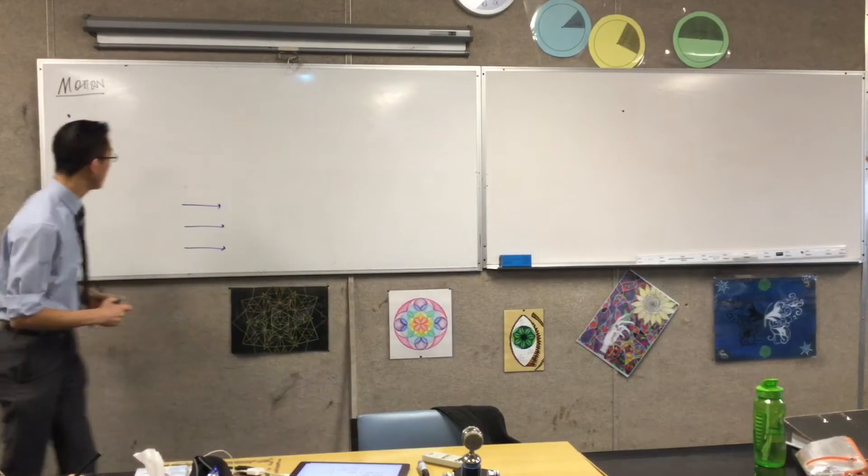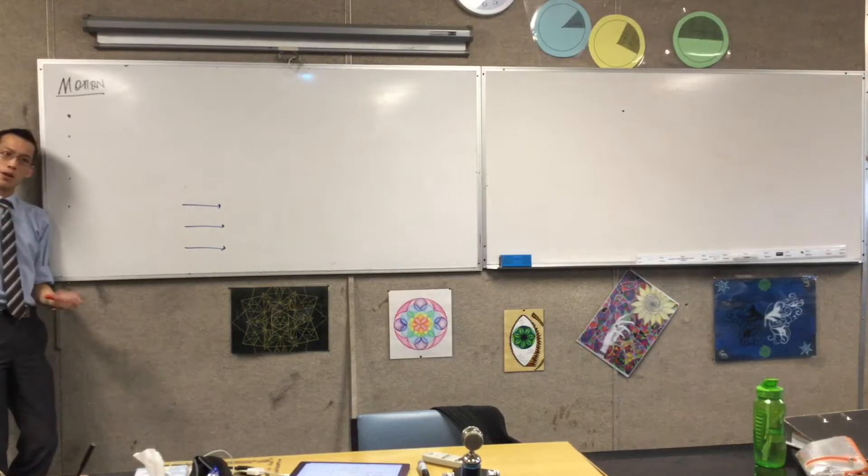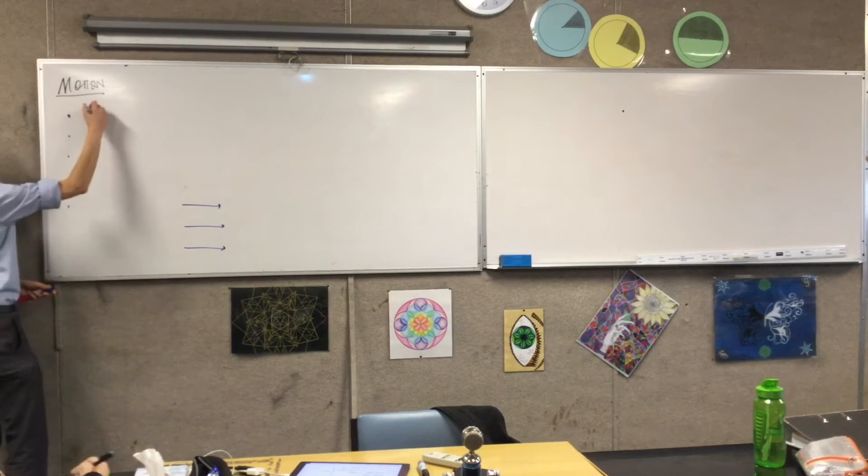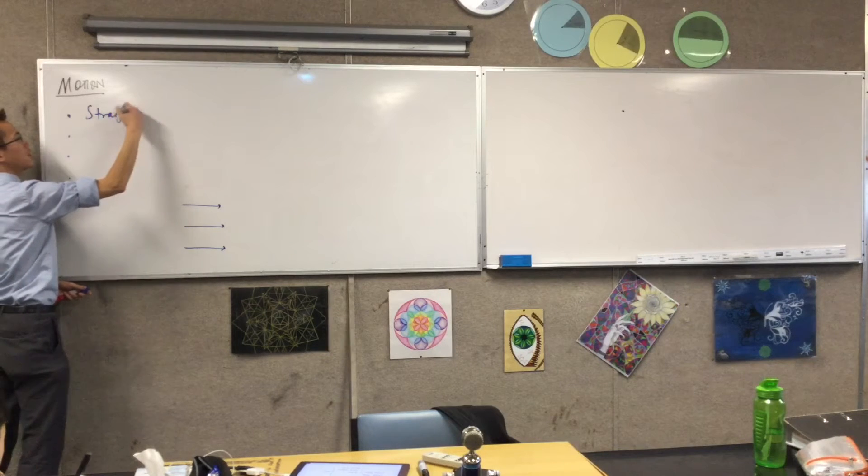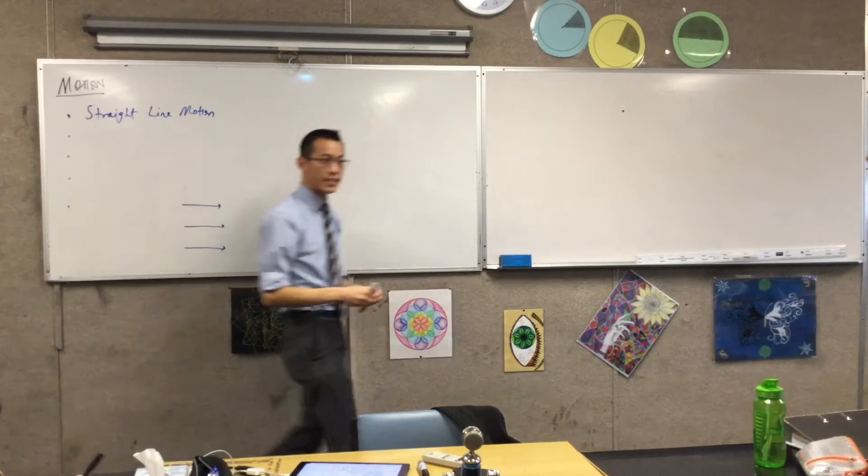So where we're going to begin is motion in a single dimension. Remember I said up, down, right, or left? We call this straight line motion because it's an object that moves along a straight line.